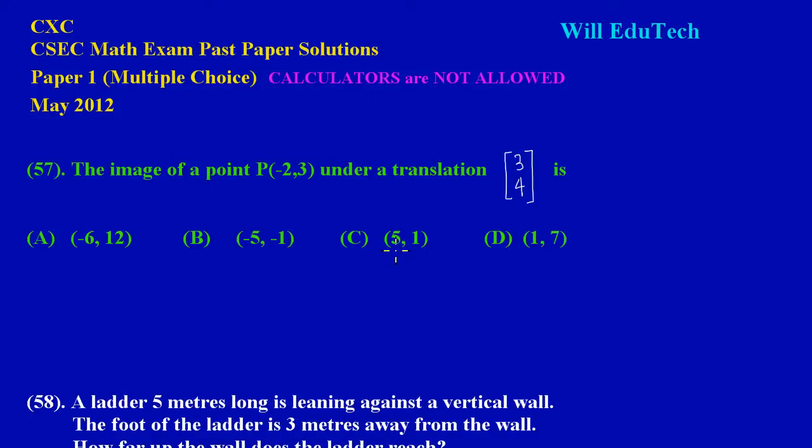It's a pleasure having you again, my friends. In this video we will be looking at the solutions to questions 57 and 58. Question 57 states: the image of a point P(-2,3) under a translation [3,4] is...